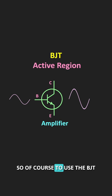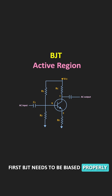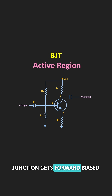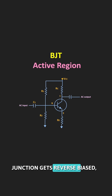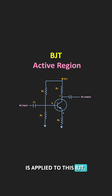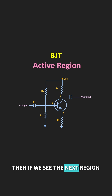To use the BJT in the active region, the BJT needs to be biased properly so that the base-emitter junction gets forward biased and the collector-base junction gets reverse biased. After proper biasing, when the AC input signal is applied to this BJT, it will amplify that input signal.